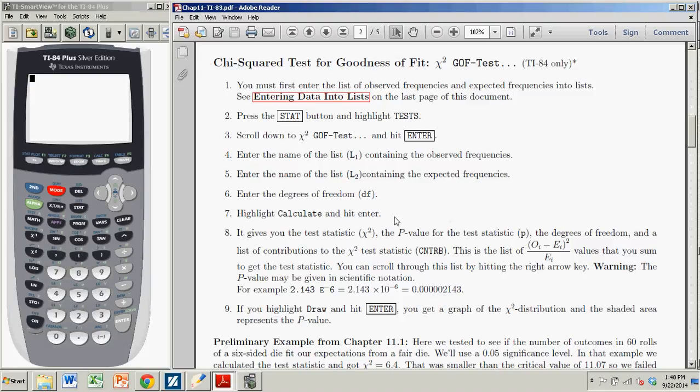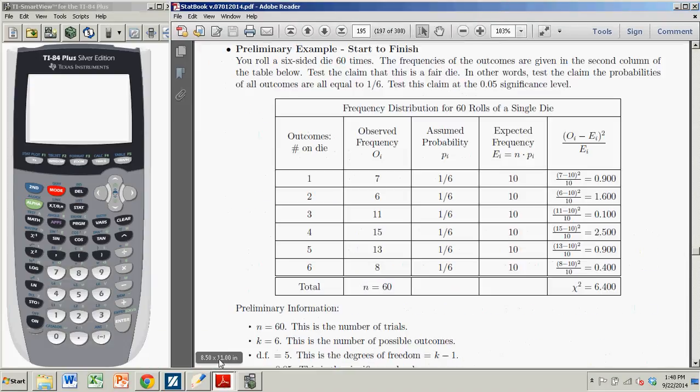OK, so for demonstration purposes, we'll use example one in chapter 11. That was the results of 60 tosses of a die. There were six outcomes, the number showing on the face of the die, one to six. We had the observed frequencies of those outcomes. And then assuming this was a fair die, where all the probabilities were equal, we had some expected frequencies.